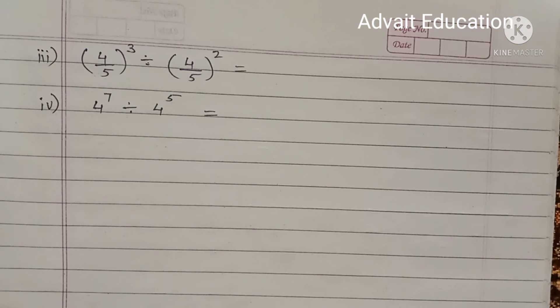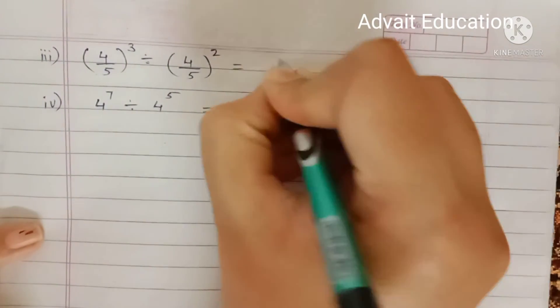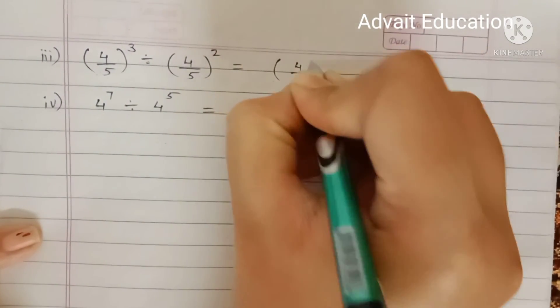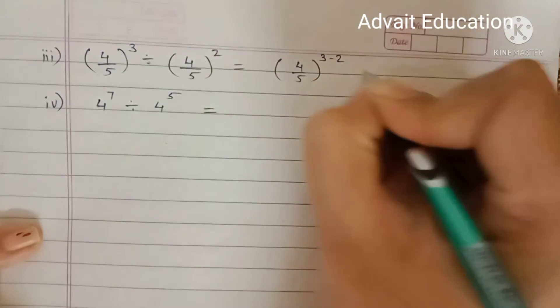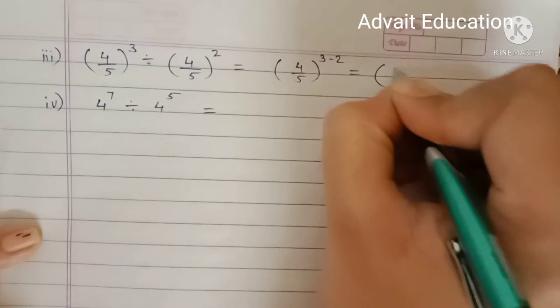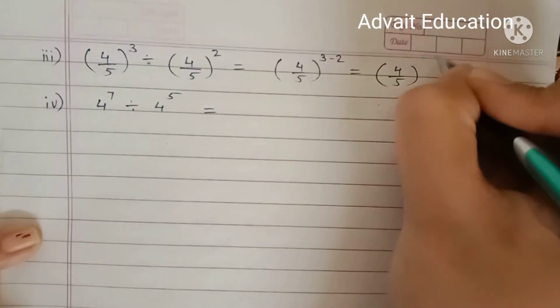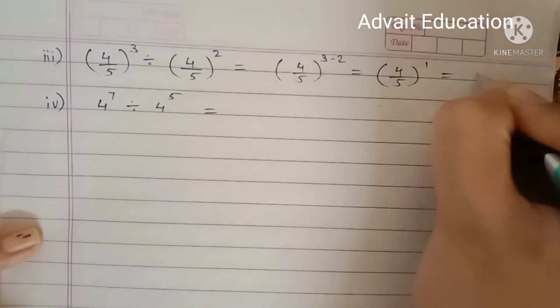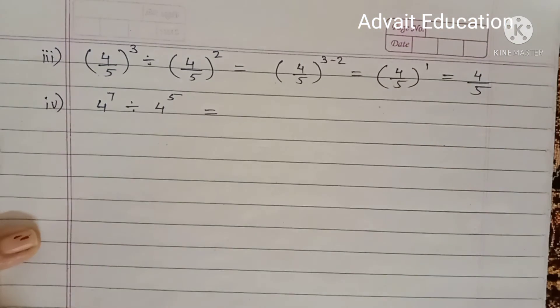Next, 4 upon 5 raised to 3 divided by 4 upon 5 raised to 2. Means 4 upon 5 raised to 3 minus 2. 4 upon 5 raised to 1. Means the answer is 4 upon 5.